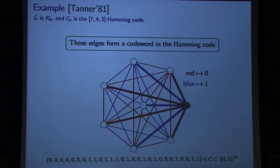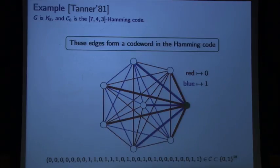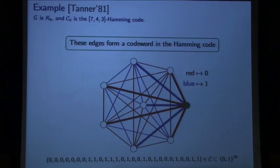The alphabet size is the alphabet of the inner code — for this example with the Hamming code, it's binary. But if you chose a Reed-Solomon code as the inner code, the outer code would have the same large alphabet size, so alphabet size is completely preserved. The constraints are naturally partitioned to constraints at every vertex, and all the constraints at every level come from the same inner code.